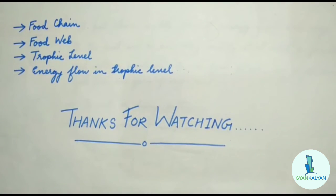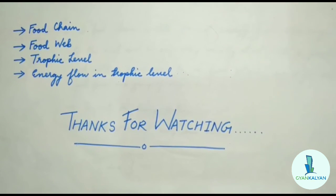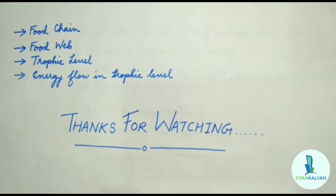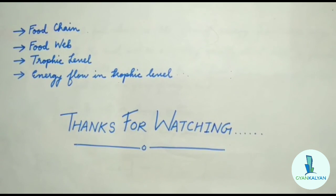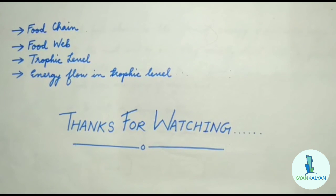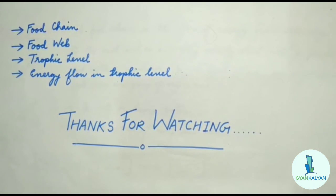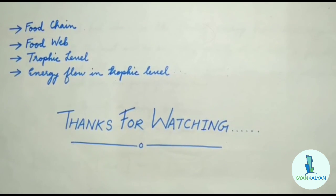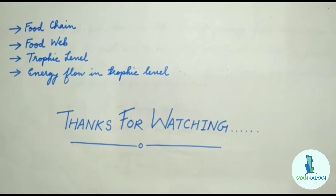So in this video we have discussed about food chain, food web, trophic levels, and energy flow. Food chain is the transfer of energy from one organism to another. Food web is the interconnection of food chains. Trophic level means each step of a food chain. We have also discussed how energy decreases as organisms move from one trophic level to the next. In the next video we will be discussing about biological magnification, ozone layer depletion, and garbage management. Thanks for watching — till then, stay safe.